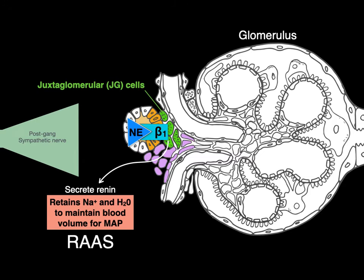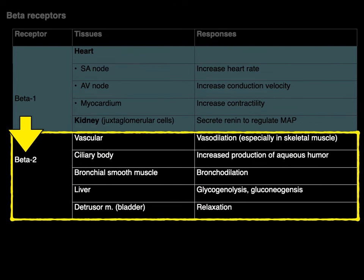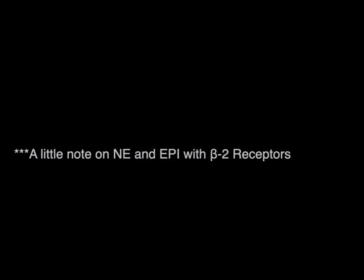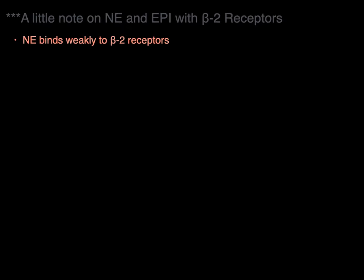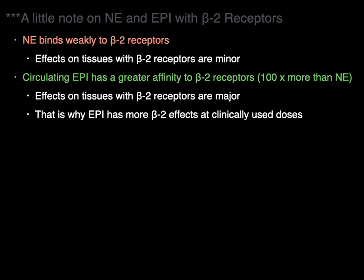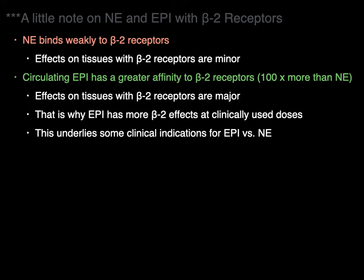Basically, it's part of the RAS system — renin, angiotensin, aldosterone system. Now let's talk about beta-2 adrenergic receptors. A note on norepinephrine and epinephrine with beta-2 receptors: norepinephrine binds weakly to beta-2 receptors, so its effects on tissues with beta-2 receptors are minor. In contrast, circulating epinephrine in the blood has a greater affinity to the beta-2 receptors — about 100 times more than norepinephrine — and so its effects on tissues with beta-2 receptors are major. That's why epinephrine has more beta-2 effects at clinically used doses, and this underlies some of the clinical indications for epinephrine versus norepinephrine.